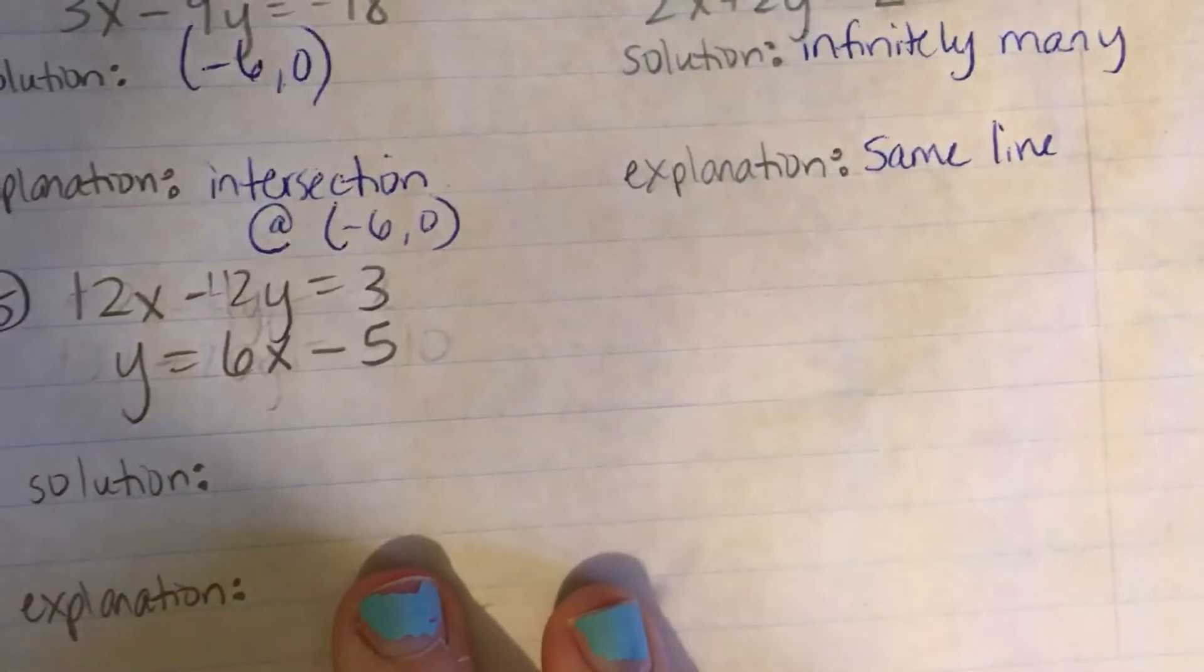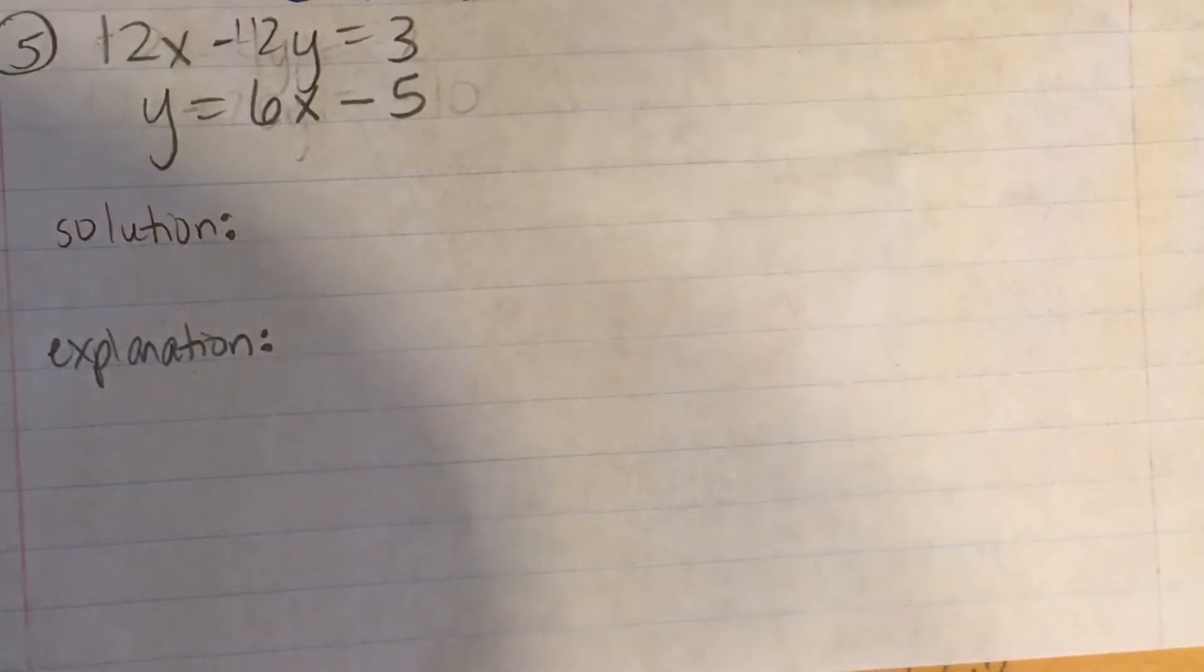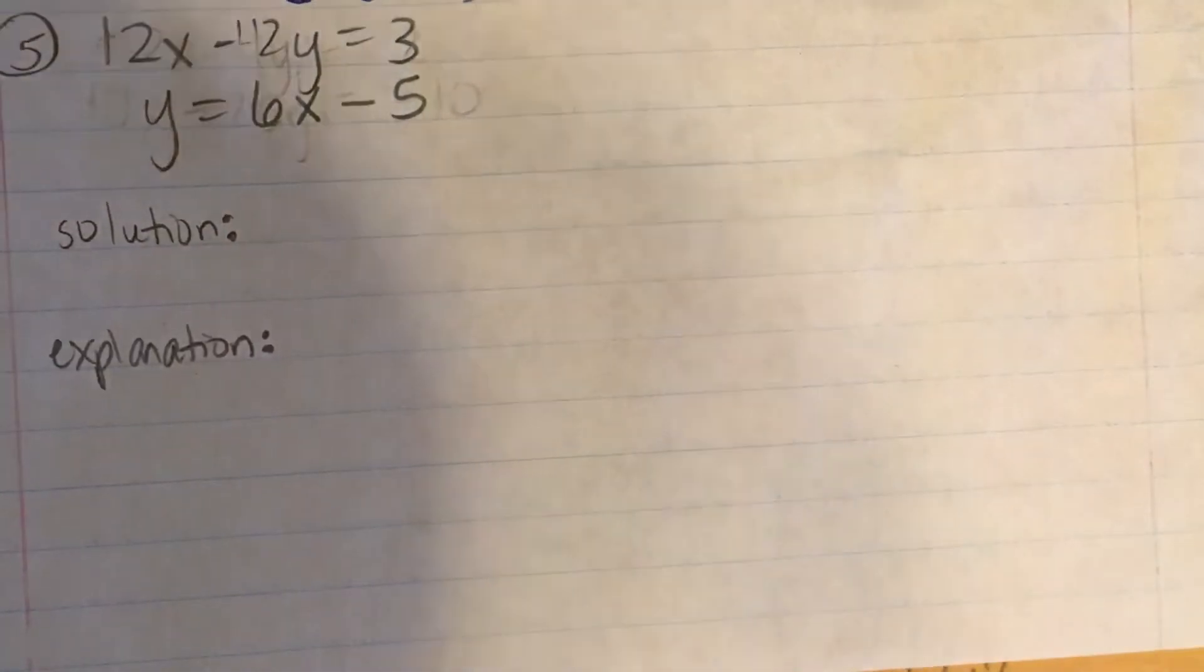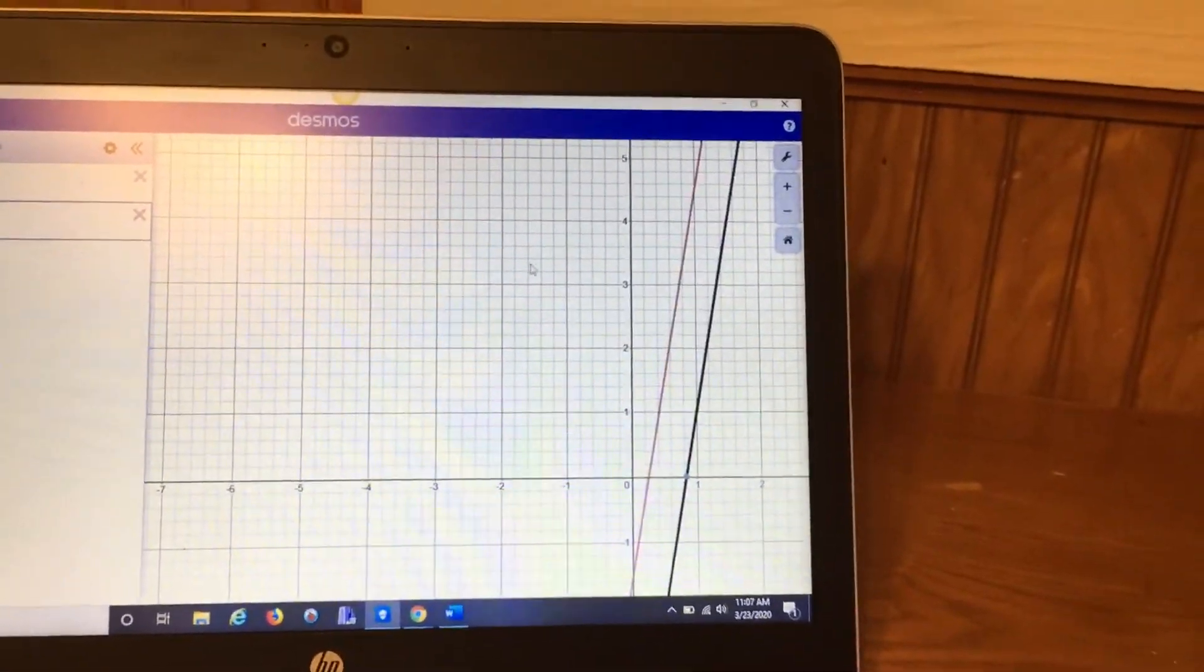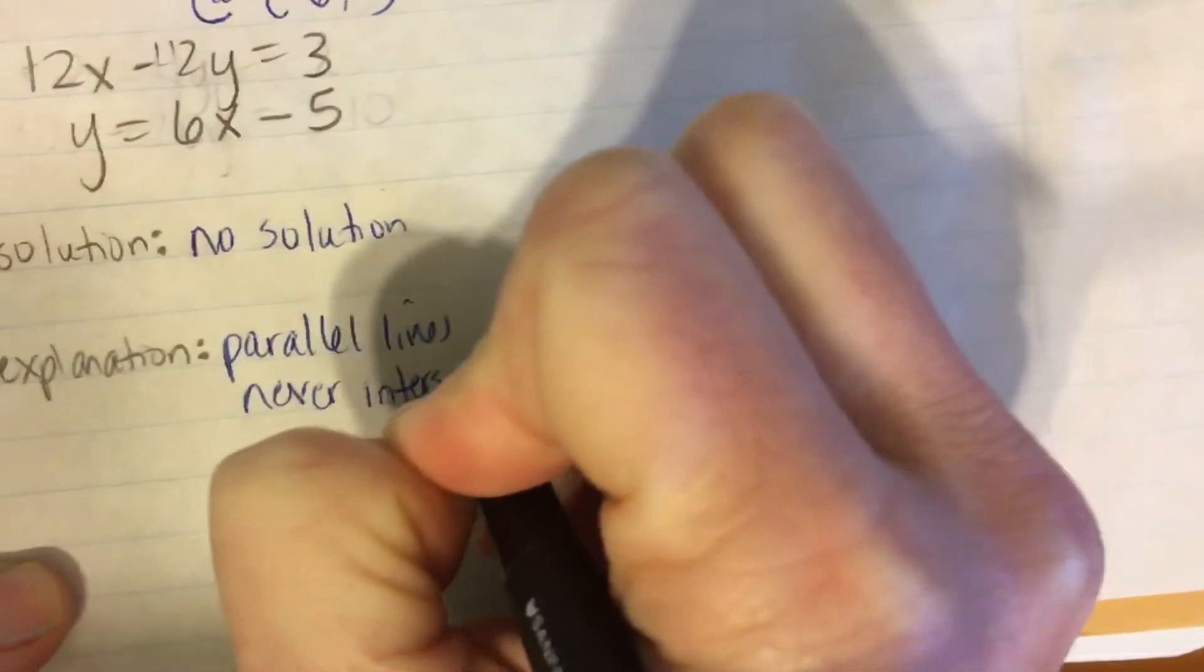Alright, and number 5. This one's also calculator active. So let me type this one into Desmos. 12x minus 2y equals 3. And y equals 6x minus 5. Alright, I've typed this one into Desmos. And can you see what we have here? We have parallel lines. Do you remember what the answer is when it's parallel lines? No solution. Alright, the explanation. Parallel lines never intersect.